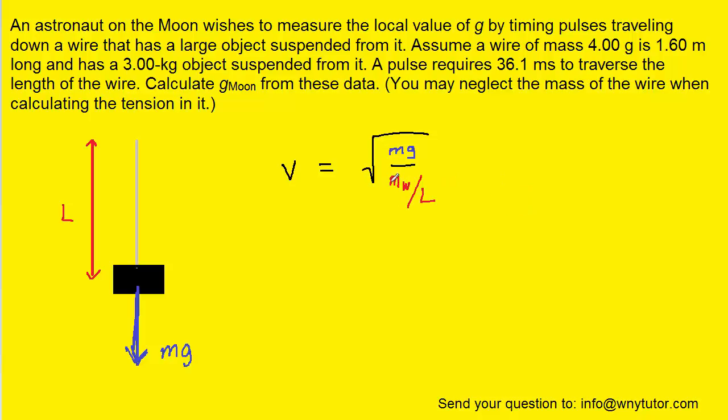Notice that we called the mass here m sub w to let us know that that's the mass of the wire itself. The m in the numerator is the mass of the block itself, which we were told was 3 kg.